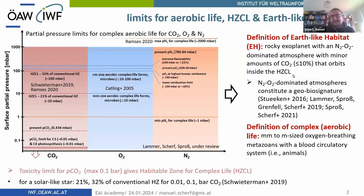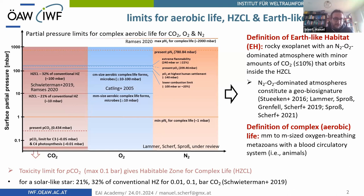First, I want to reiterate something Helmut Lammer already said last week: what we understand as an Earth-like habitat. The figure on the left, from a paper just submitted to Astrobiology, shows pressure limits for which complex aerobic life may exist. We define complex aerobic life as millimeter-to-meter-sized oxygen-breathing metazoans with a blood circulatory system — basically advanced animals. These toxicity limits are based on Earth-like life, so on other planets they may evolve to withstand different limits for CO2 and N2.